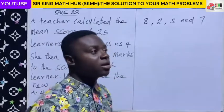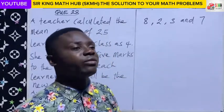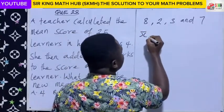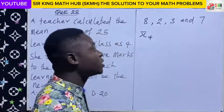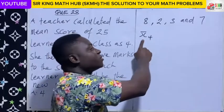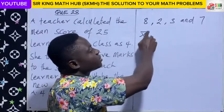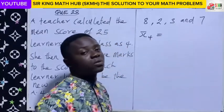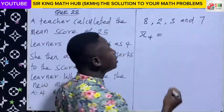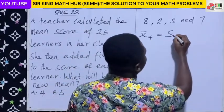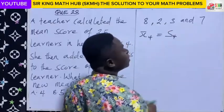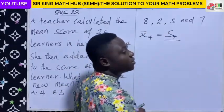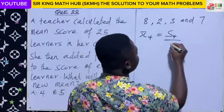We have four numbers here. If I ask you to calculate the mean of these four numbers, what will you do? So to calculate the mean of four numbers, you have to sum up the four numbers and divide by the number of values in the question — in this case, four.